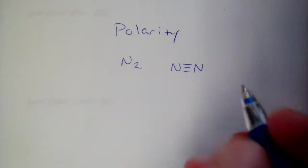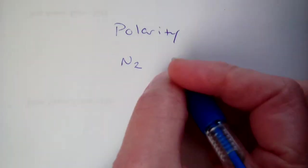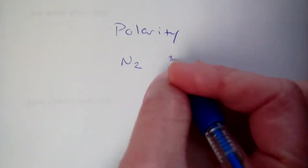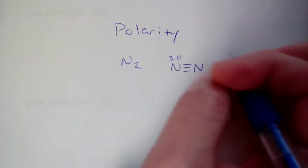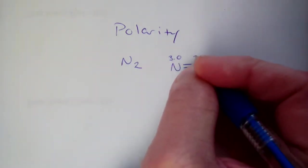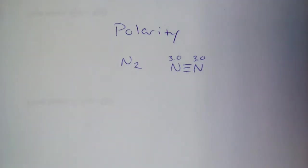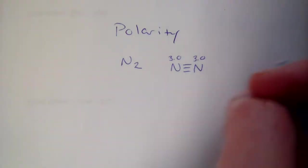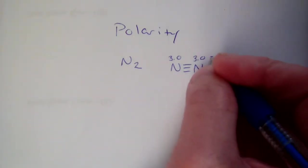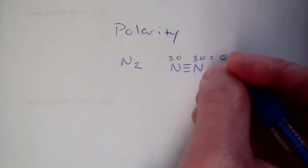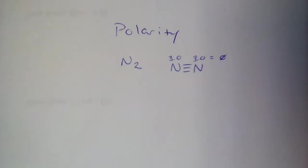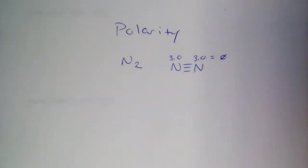This is a perfect scenario because when you look at the electronegativity for the two elements, the electronegativities will be exactly the same. Nitrogen is 3.0, so this nitrogen has an electronegativity of 3.0, and this one has an electronegativity of 3.0 — there is no difference.